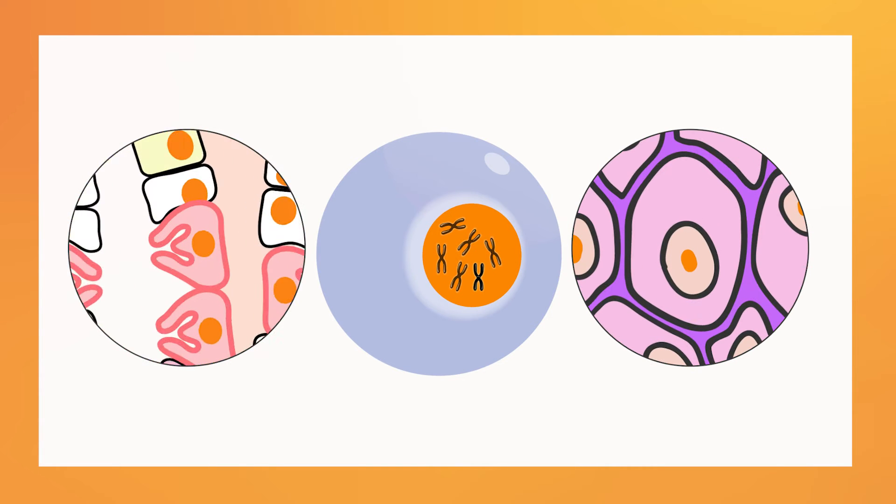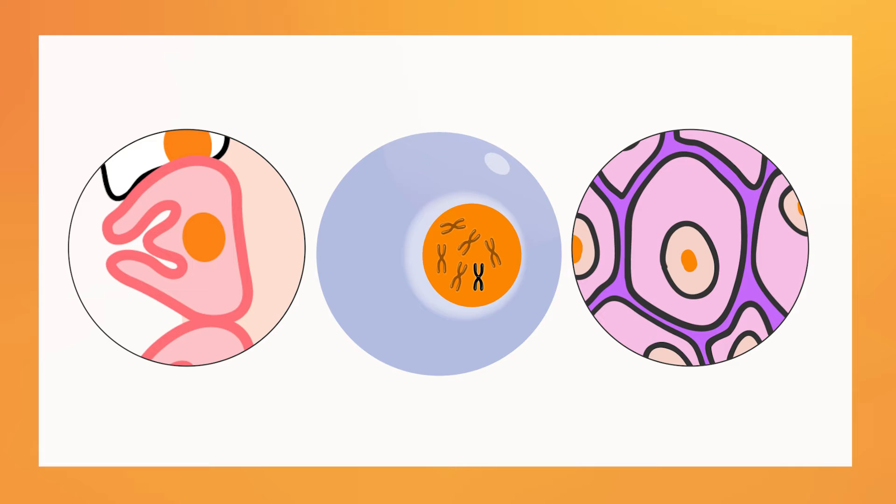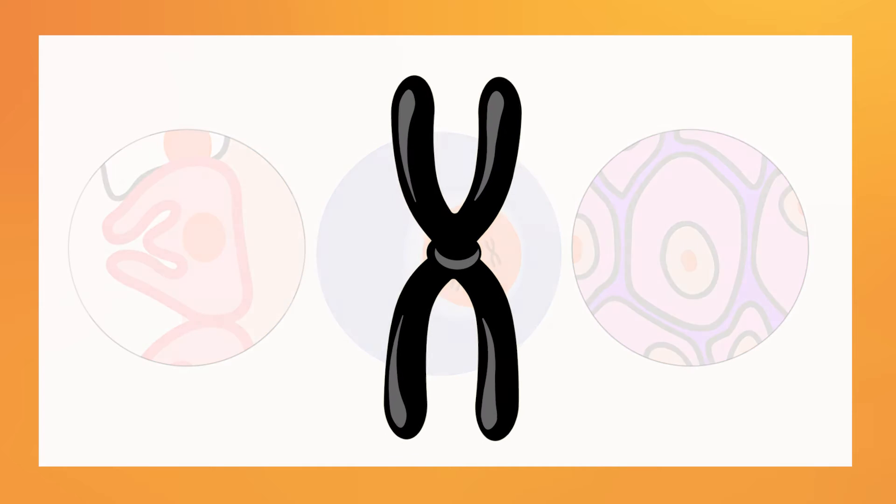Every cell in your body has the exact same genes, but what makes a skin cell different than a stomach cell, for example, is the way in which those genes are expressed.